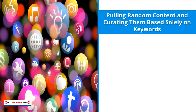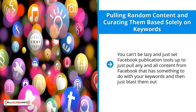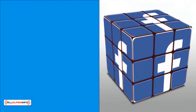Mistake five: Pulling random content and curating it based solely on keywords. You can't be lazy and just set Facebook publication tools up to pull any and all content that has something to do with your keywords and then blast it out. You're just spamming when you do that. You have to be very deliberate and careful regarding the kind of content, whether curated or not, that you will associate with your brand.